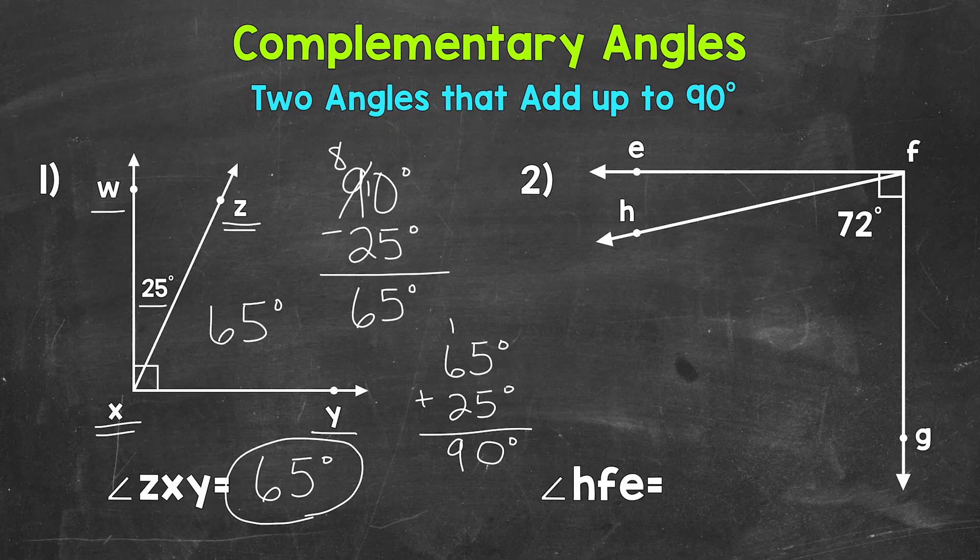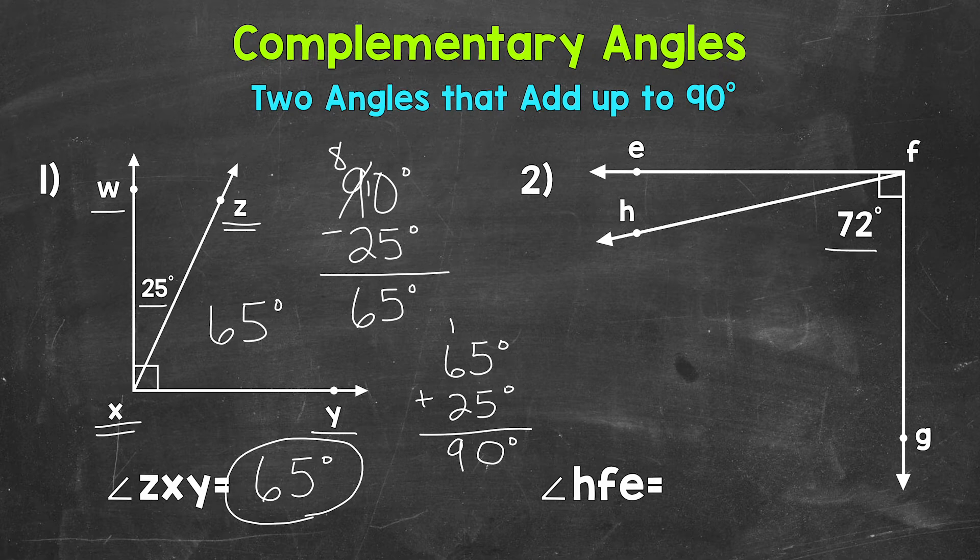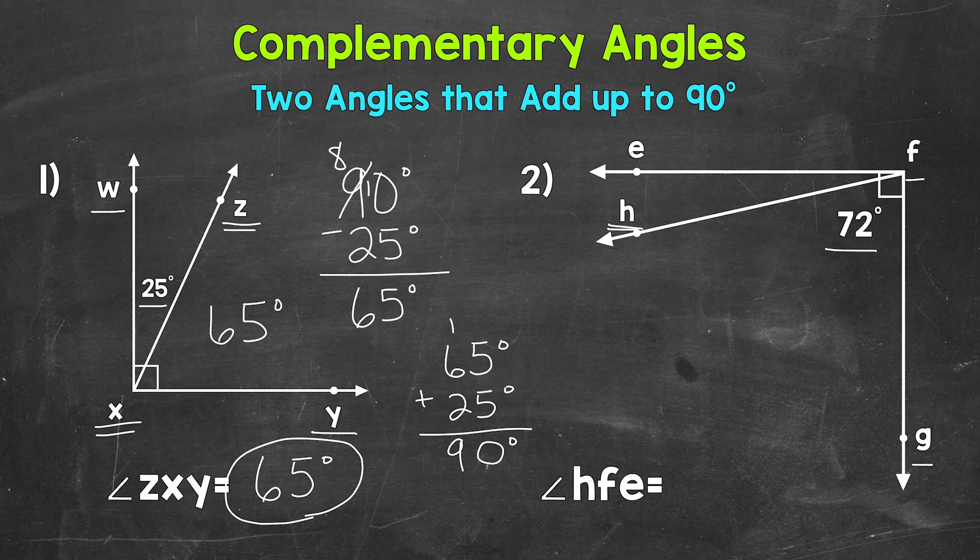Let's try another example here and move on to number 2 where we have a given angle measure of 72 degrees. So angle GFH equals 72 degrees. We need to figure out angle HFE.